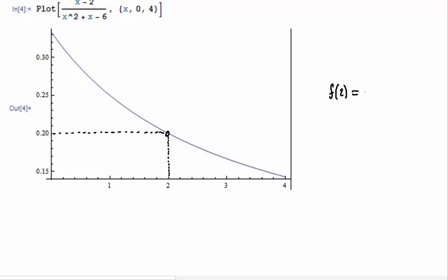As x goes to 2, your function is going to 0.2. This is not to say that f of 2 equals 0.2. That's not true - the function is not defined there. But the limit of the function as x goes to 2 is approximately 0.2.